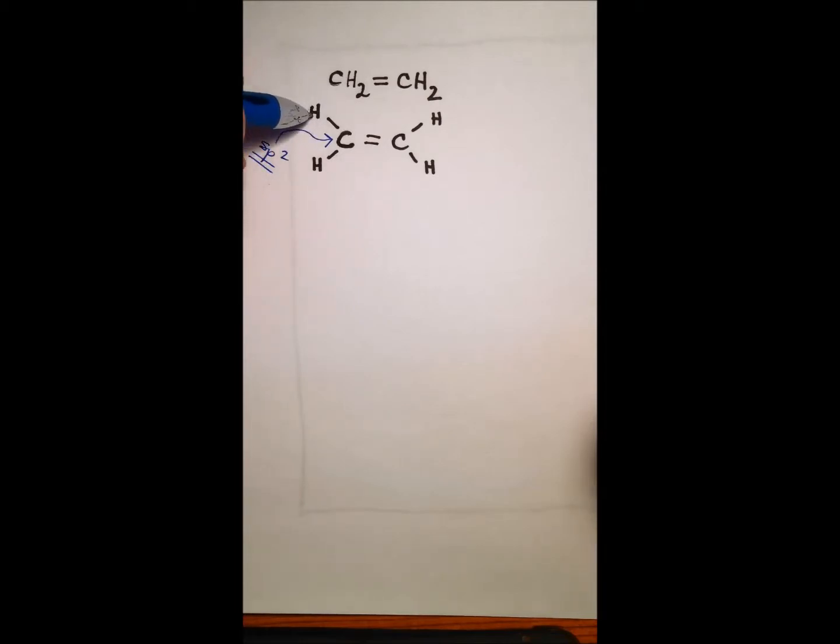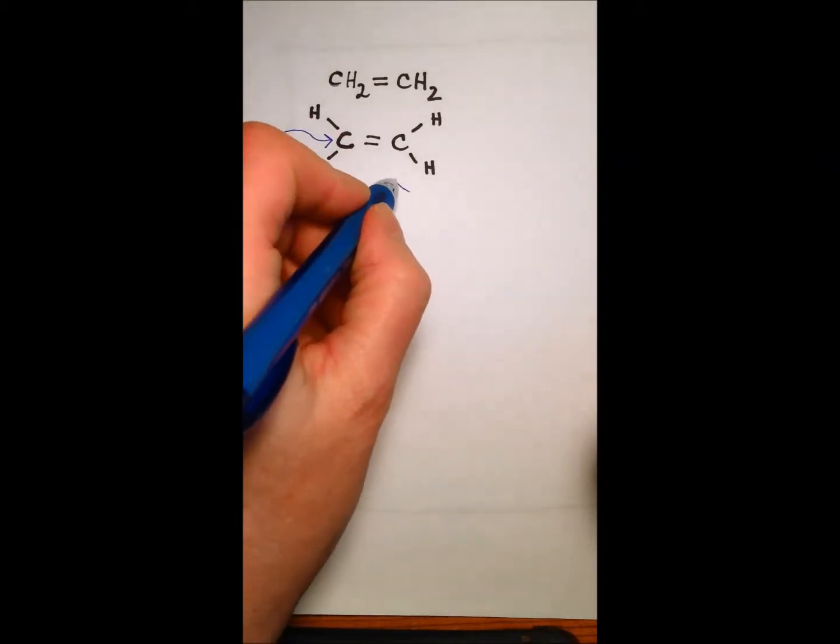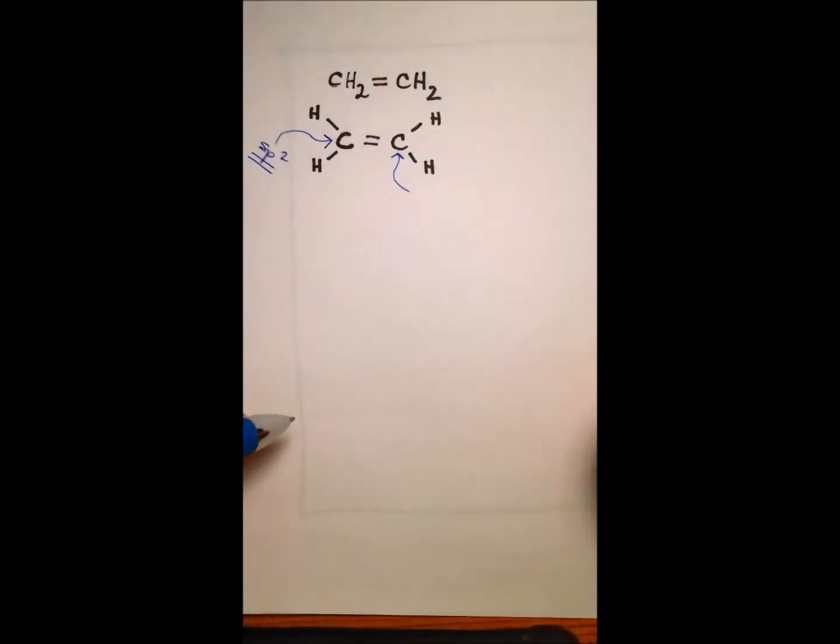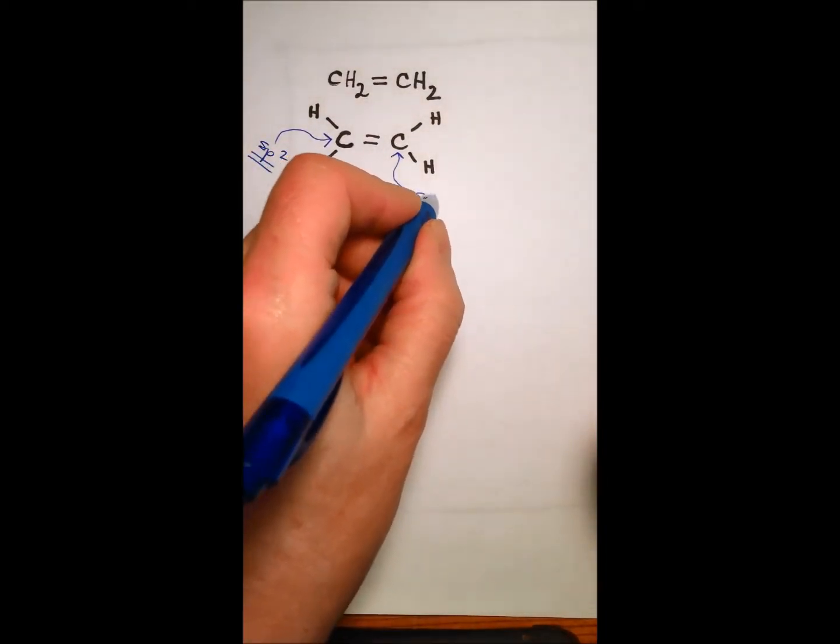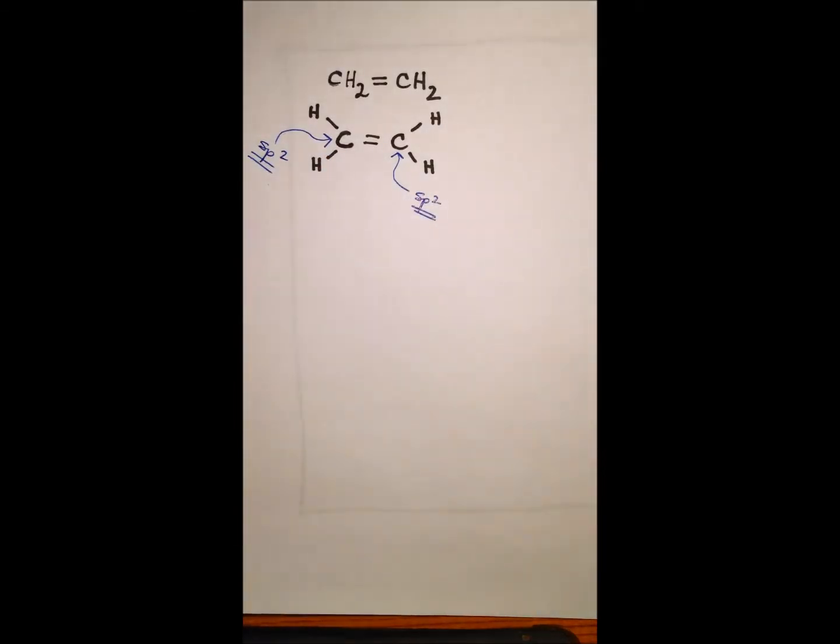So sp2 very important. And the hydrogens of course are just using their 1s orbital to overlap with that sp2 to form the bond. And this carbon as well is also sp2 hybridized, they are the same.